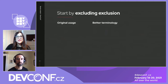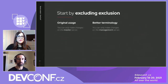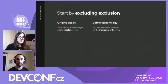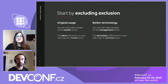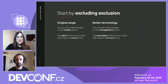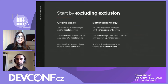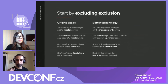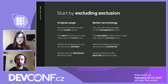Let's start excluding the exclusive language. Instead of saying you are making changes into the master server, why not say you are making changes into the management server? Instead of saying the slave DNS zone is a read-only copy of a master zone, how about saying the secondary DNS zone is a read-only copy of a primary zone? Note that we are using different terms to replace master — you can adapt the replacement to suit your project better.